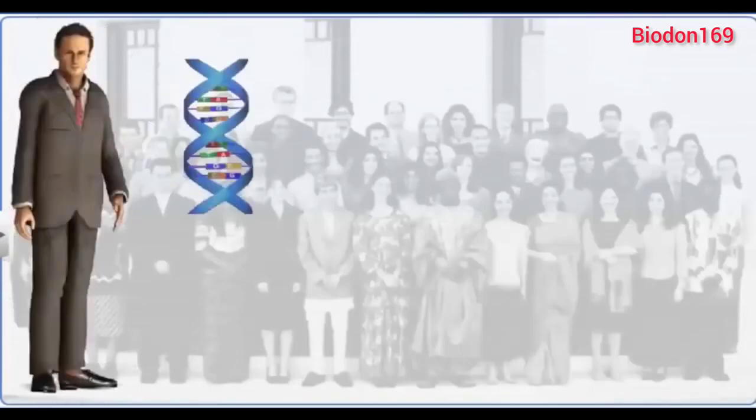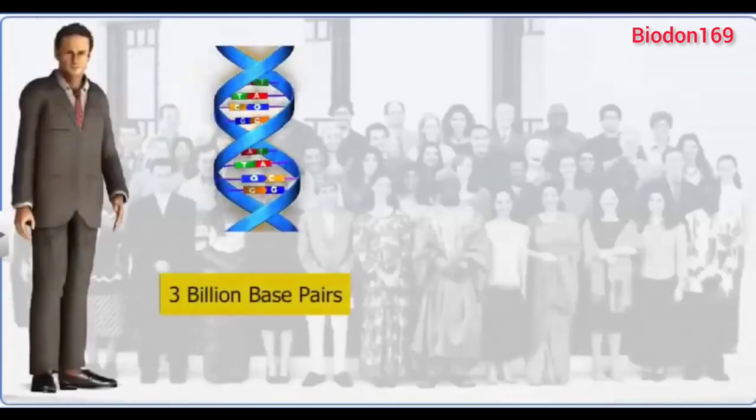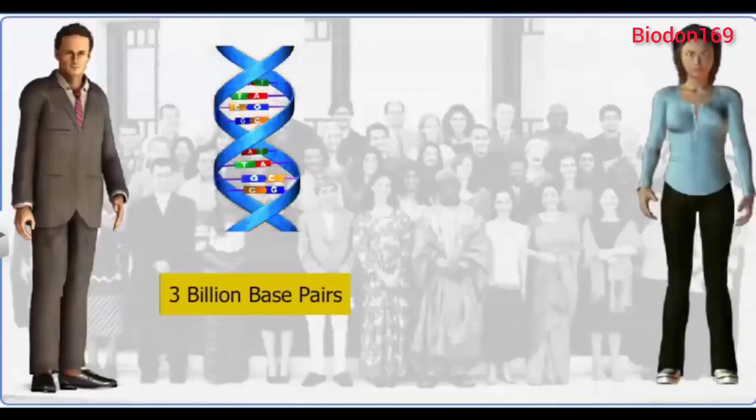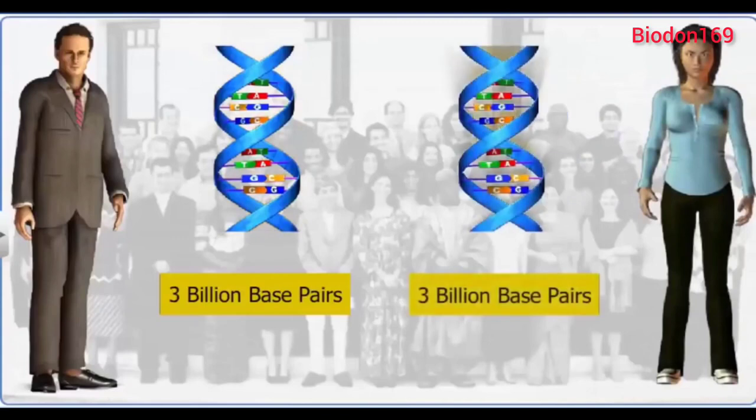The human genome has about 3 billion base pairs. Therefore, it would be a time consuming and expensive task to find out the genetic difference between two individuals, as it would require comparing two sets of 3 billion base pairs.